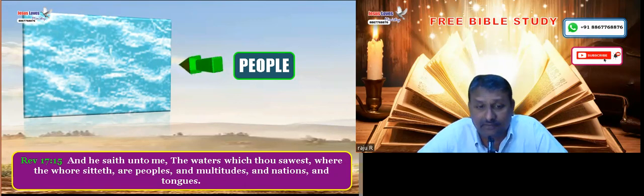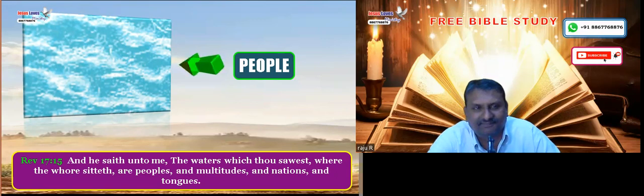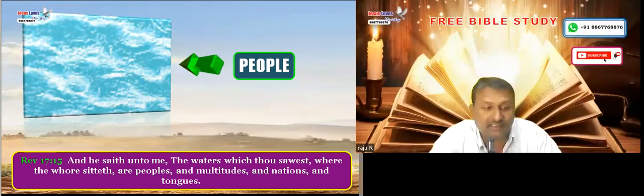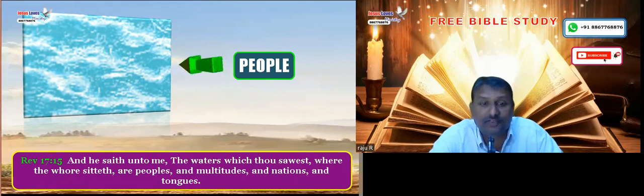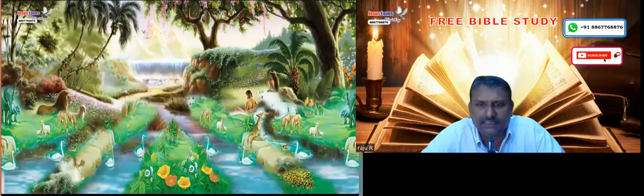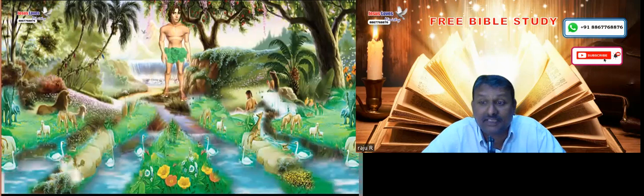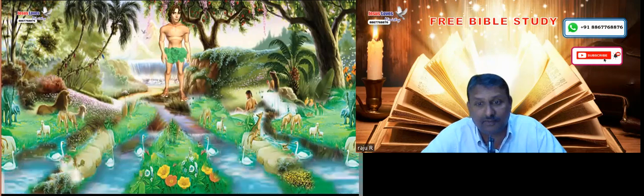Let us read Revelation 17:15. And he said unto me, the waters which thou sawest, where the whole world sitteth, are peoples, and multitudes, and nations, and tongues. The verse clearly says that the waters which thou sawest are peoples. So here, when it says that the river came out of Eden, it means the people actually came out of Eden.